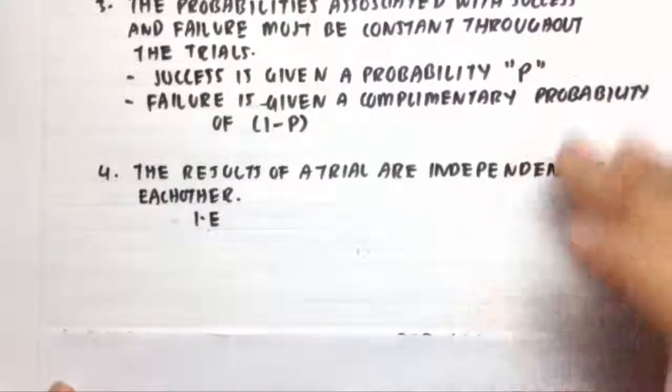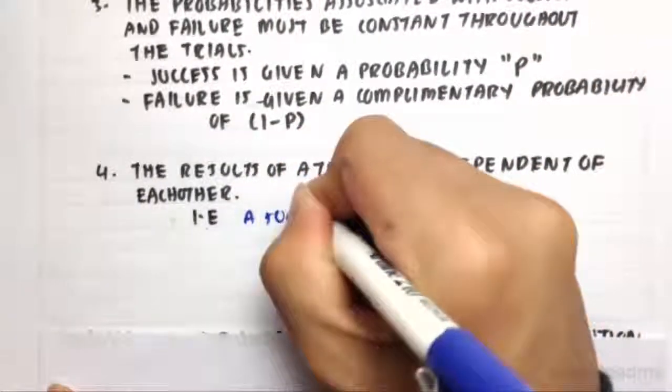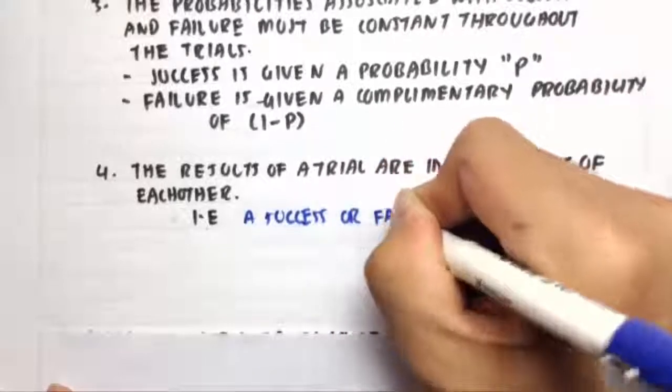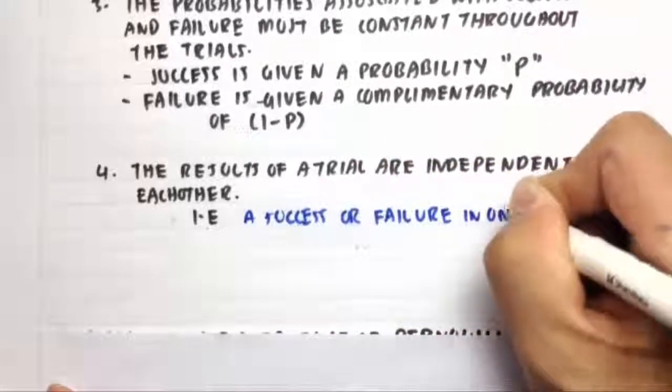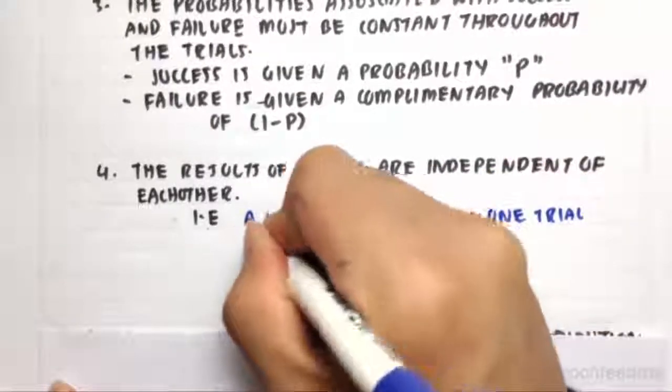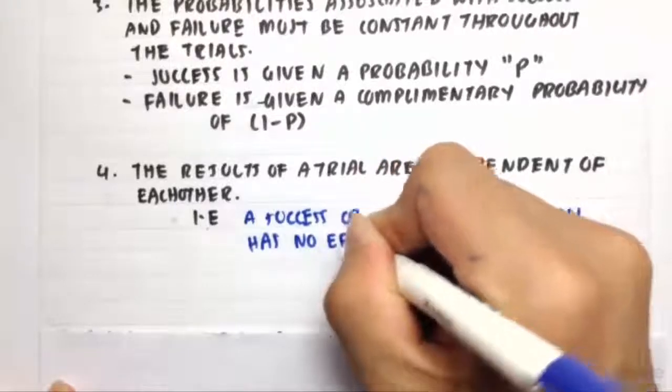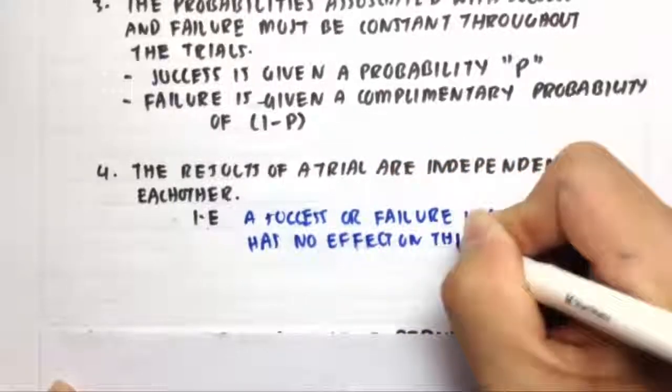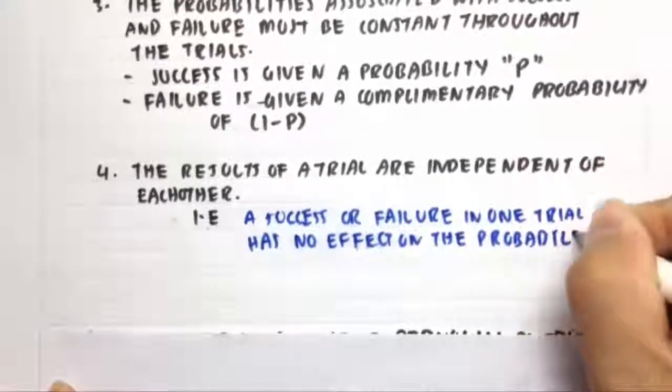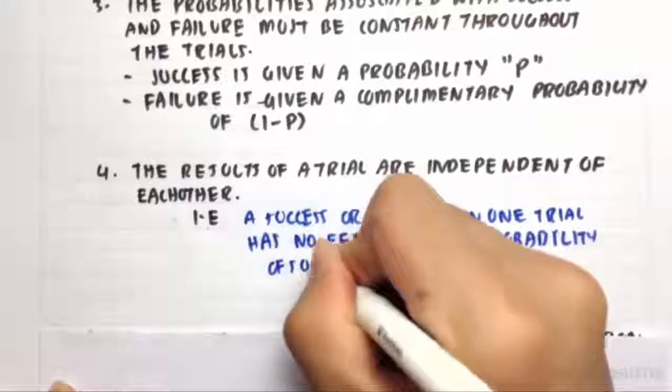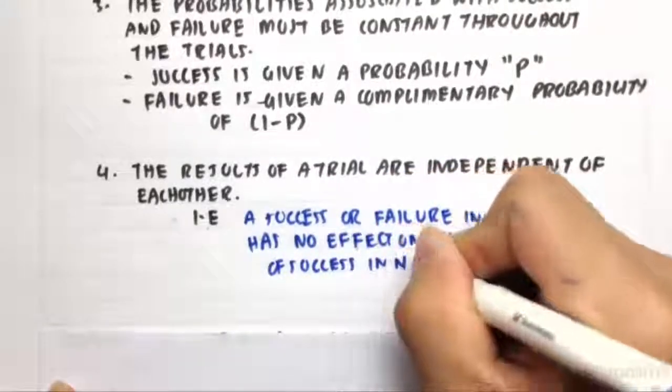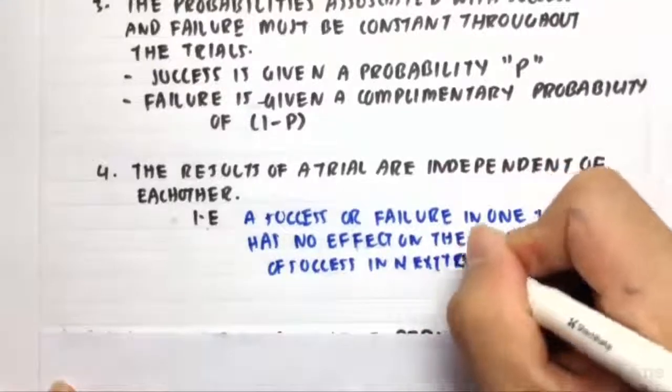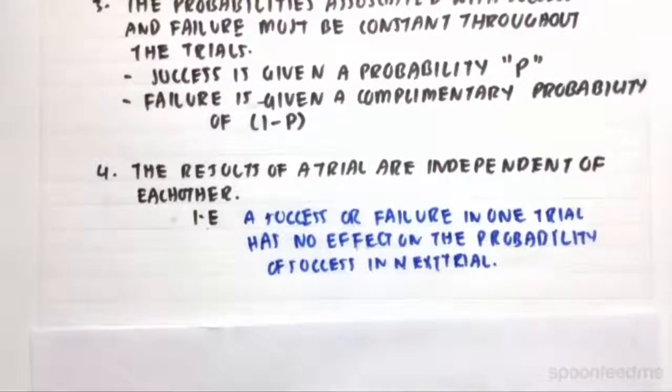Fourth, the results of the trials are independent of each other. This means a success or failure in one trial has no effect on the probability of success or failure in the next trial. If we roll a 6 in the first trial, the probability of rolling a 6 in the second trial won't be affected, and the same applies to not rolling a 6.